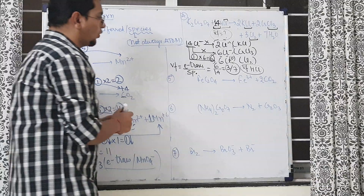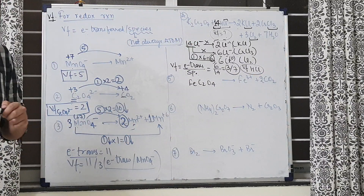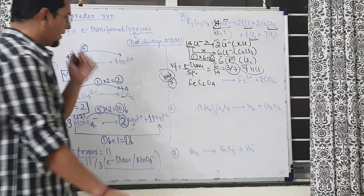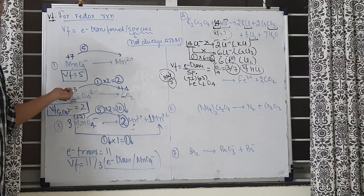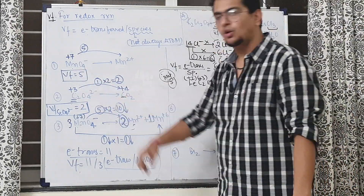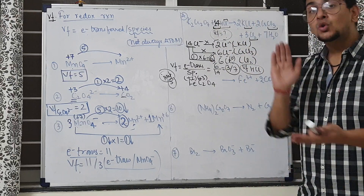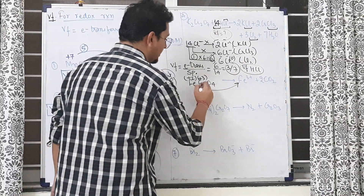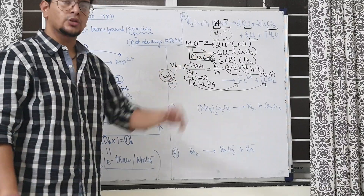Next — a very important example that people often get wrong. FeC₂O₄ → Fe³⁺ + 2 CO₂. Here two different atoms are undergoing oxidation state changes simultaneously. Fe is at +2 and carbon (in C₂O₄²⁻) is at +3. Fe goes from +2 to +3 — change of 1, increase. Carbon goes from +3 to +4 — change of 1 per carbon atom, increase. Unlike previous examples where only one element changed, here both iron and carbon are changing.